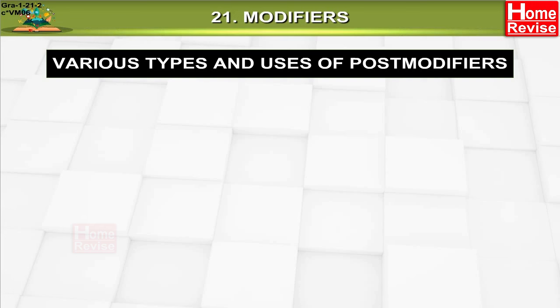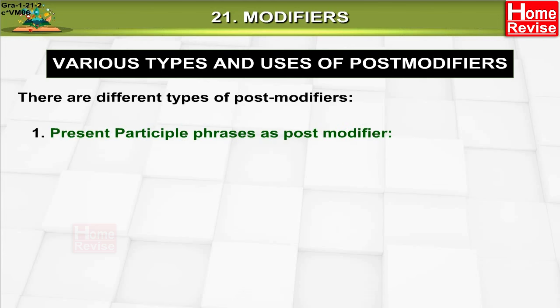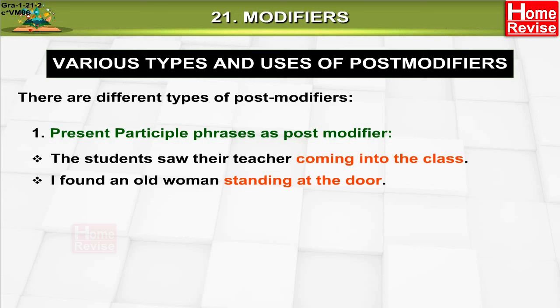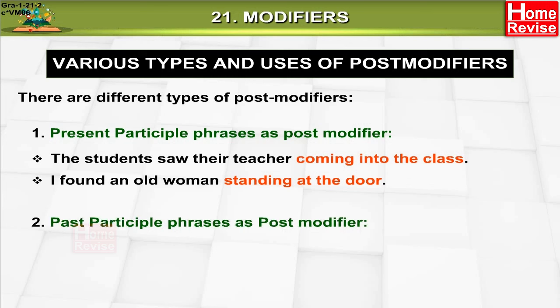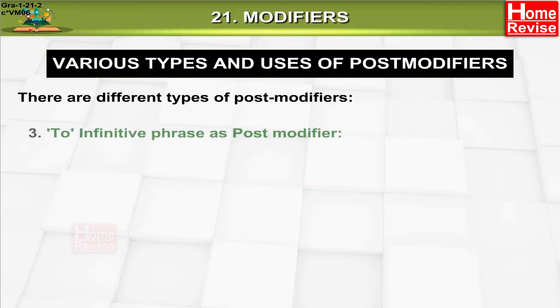Various types and uses of post-modifiers. There are different types of post-modifiers. One: present participle phrases as post-modifier. Example: 'The students saw their teacher coming into the class.' 'I found an old woman standing at the door.' Two: past participle phrases as post-modifier. Example: 'A tiger killed by the hunter was left in the jungle.' 'I have got the letter written by you.'